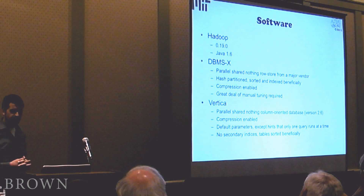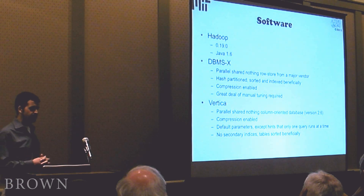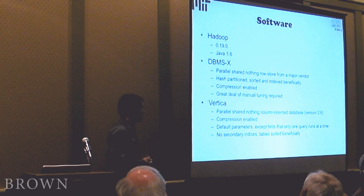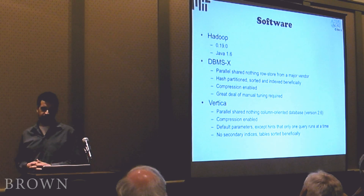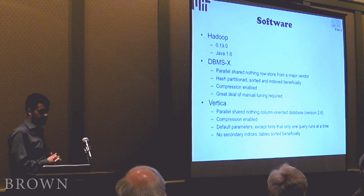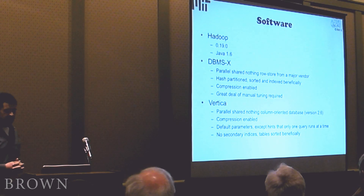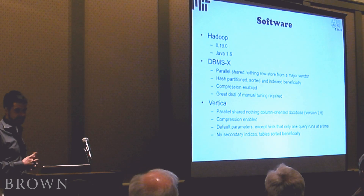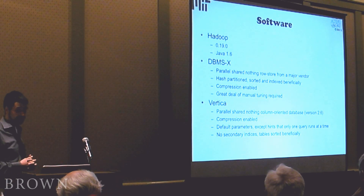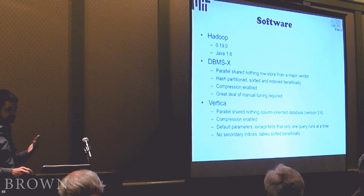The software we used was Hadoop version 0.19 running on Java 1.6, and a commercial parallel shared-nothing row store from a major vendor which we're calling DBMSX. We configured this to make the system run as fast as possible — we used hash partitioning, selected sort orderings of primary keys and secondary indices to be as beneficial as possible for the workload, and enabled compression. It took quite a bit of manual tuning. We also used Vertica, a parallel shared-nothing column-oriented database, version 2.6, with compression enabled and features selected for best performance.